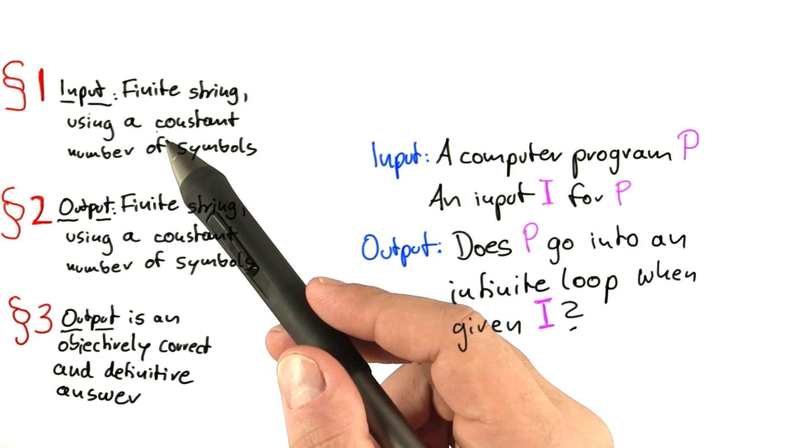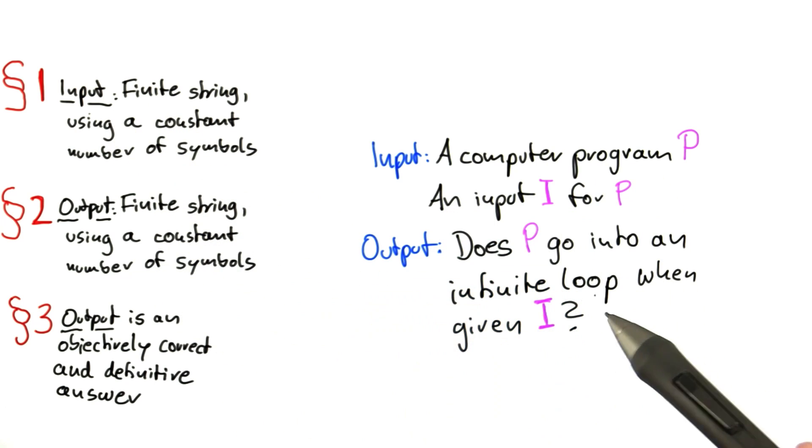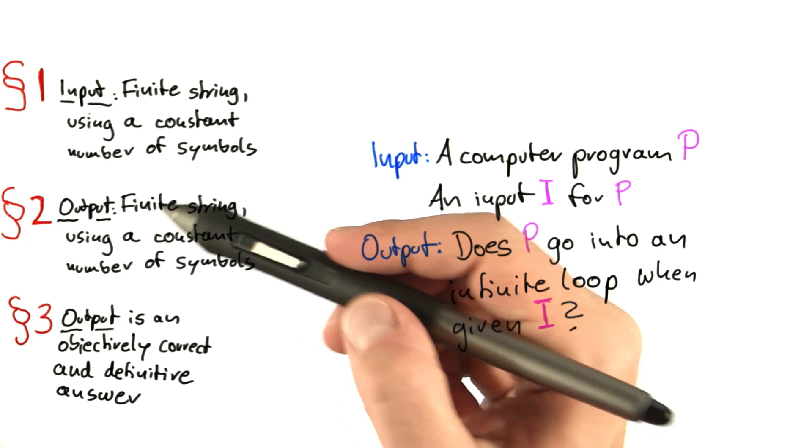So, as I just said, the input is a finite string, constant number of symbols, perfect. Output, it's a decision problem. So, the output will either be yes or no.